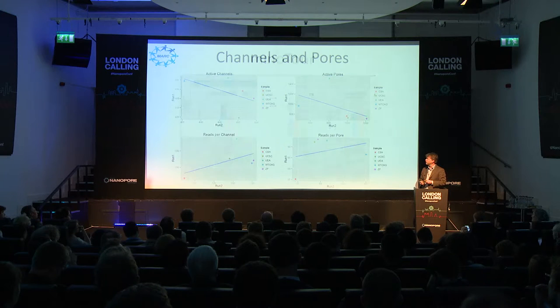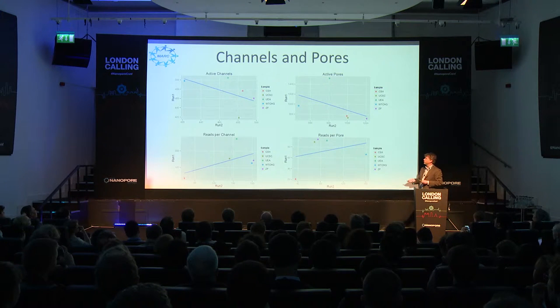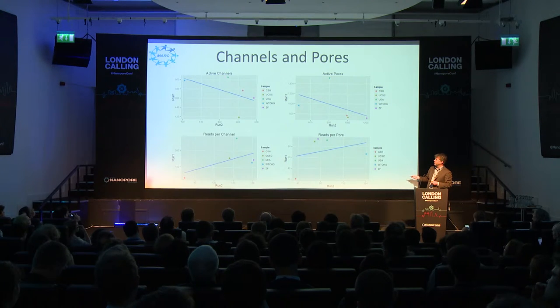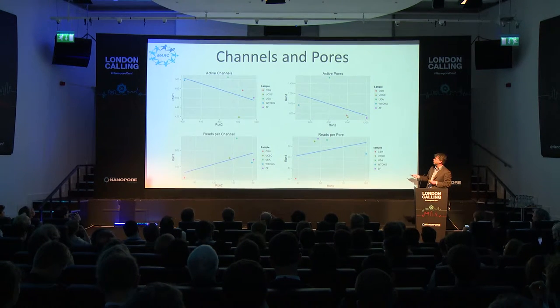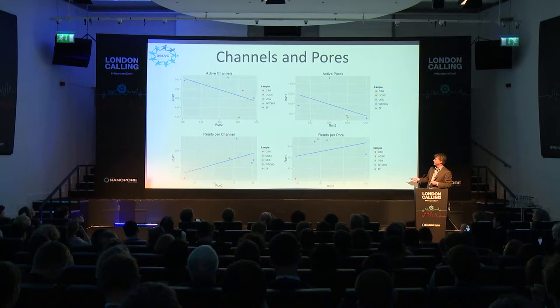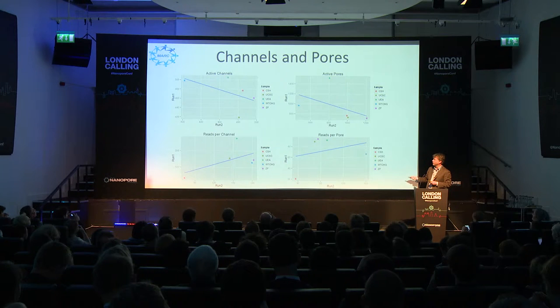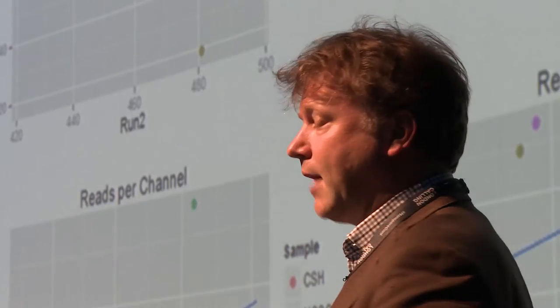There's not actually much more analysis that has been done, because the files were only put together about two weeks ago, but we are at this stage. What Matt is plotting here is, for many different parameters of runs, the behavior of run 1 and run 2 across these different samples. We don't really have enough points yet to be sure about the lab effect.